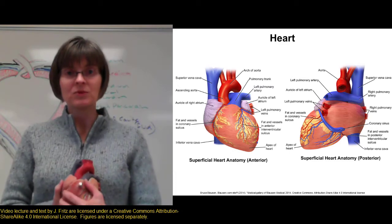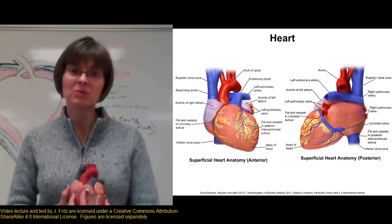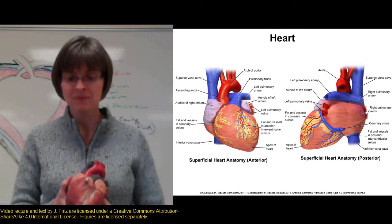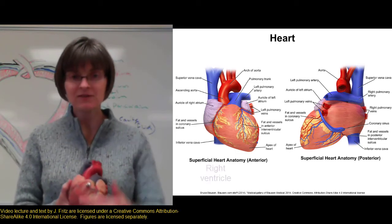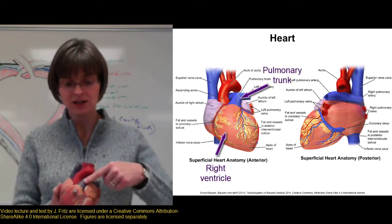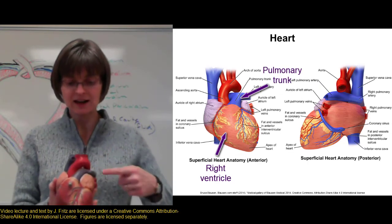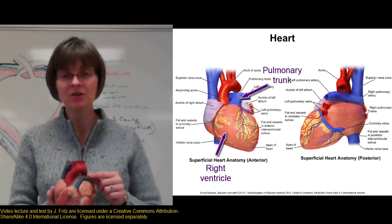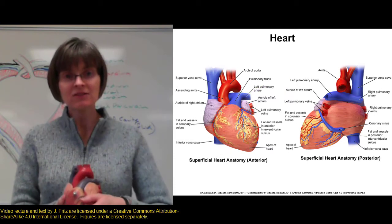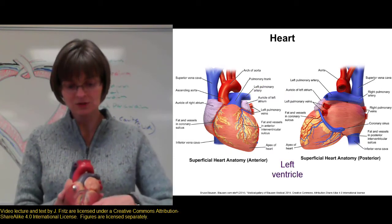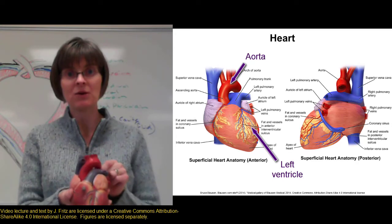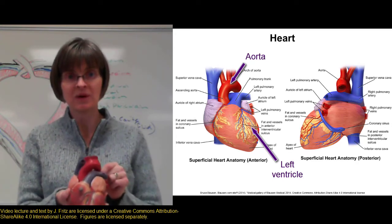The ventricles, when they contract, push the blood into the arteries to go away from the heart. The right ventricle pushes blood into the pulmonary trunk, which then divides into the right and the left pulmonary arteries to carry blood to the lungs. The left ventricle, when it contracts, pushes the blood up into the aorta to carry the blood out to the rest of the body.